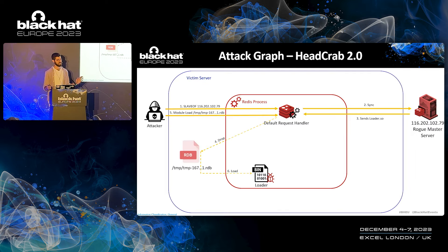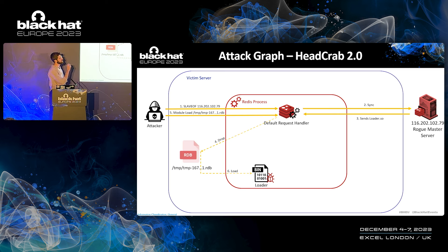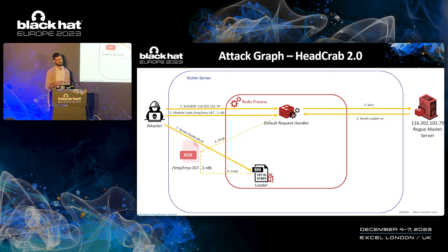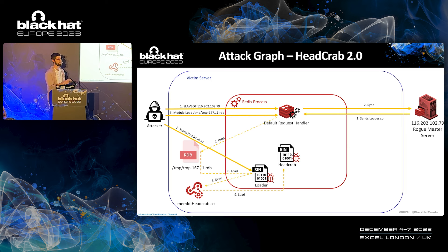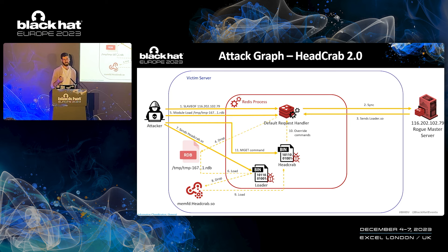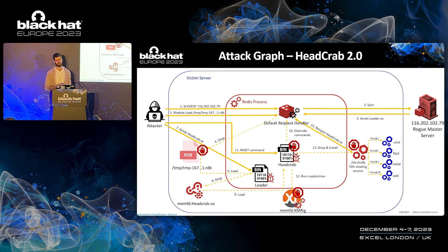In the updated attack graph, the rogue server does not send HeadCrab directly — it sends a loader .so, which is dropped into the temp directory and loaded. Then HeadCrab is sent to the loader, being saved into memfd and loaded. This is again done to avoid creating files on disk and avoid being scanned by antivirus or disk scanning solutions. Then everything is pretty much the same: overriding of commands, usage of the mget command to execute the cryptominer, and the service with all of its actions.